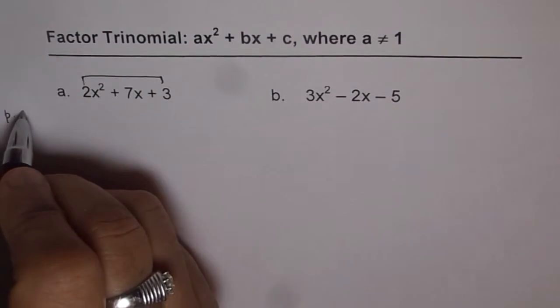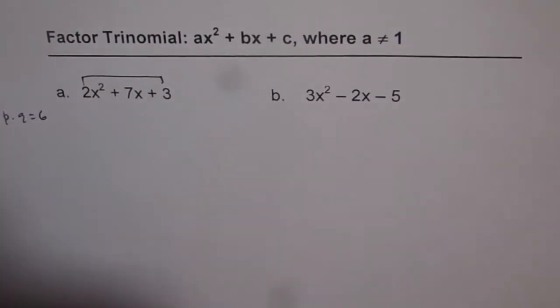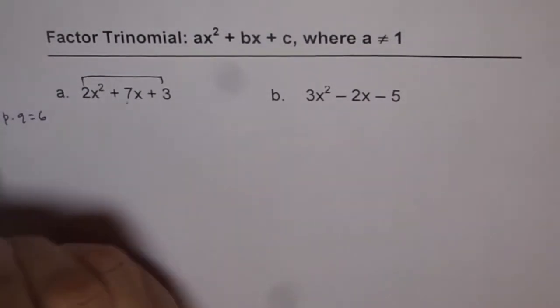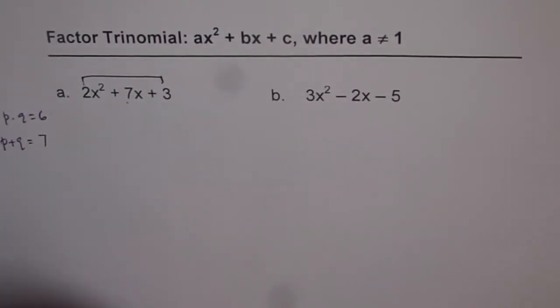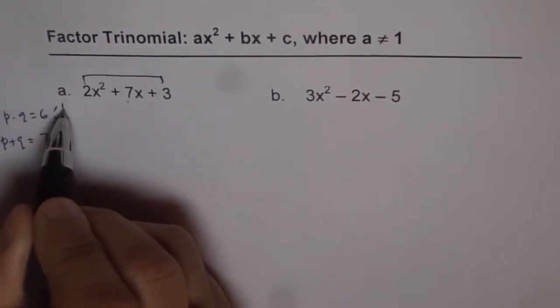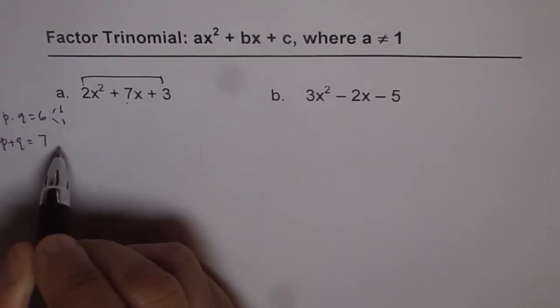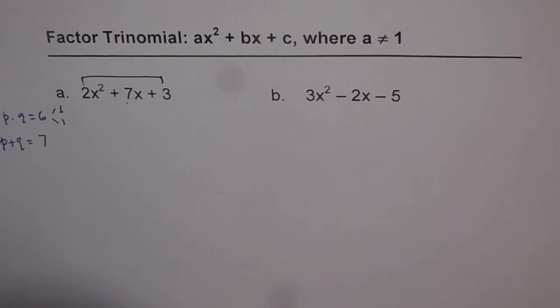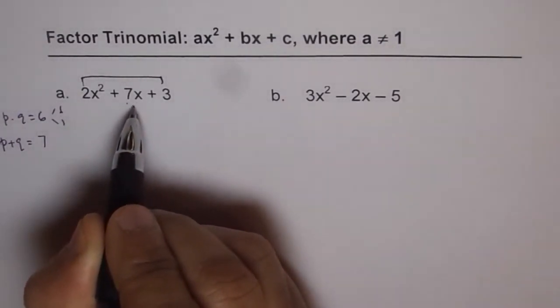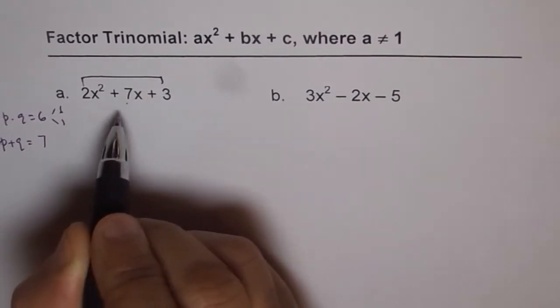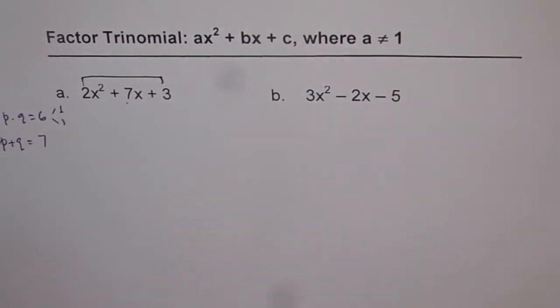So that means p times q equals 6 and whose sum is 7, p + q equals 7. The two numbers which could satisfy are 6 and 1. So when you add 6 and 1, you do get 7. So here, you basically split 7x as 6x + x and then do common factoring. This is how you will do it.